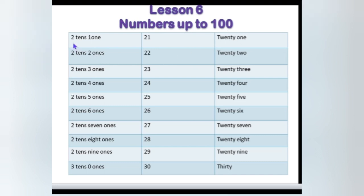Listen here. 2 tens, 1 one — 21. Then 2 tens, 2 ones — 22.